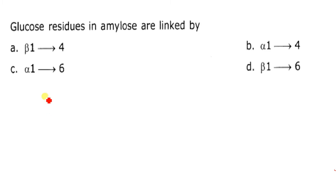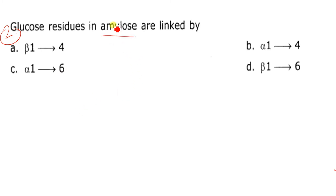The second question asks: glucose residues in amylose are linked by what bond? The correct answer is alpha-1,4 glycosidic bond.